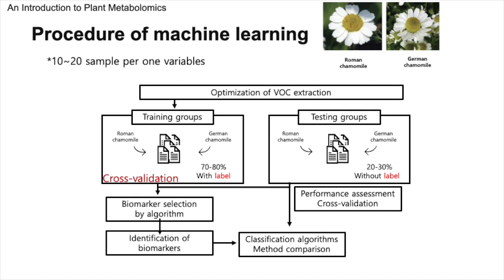As we sift through the data, our algorithms work diligently to pinpoint the biomarkers — the VOCs that will serve as the flag bearers for each chamomile type. Selecting the correct biomarkers is akin to choosing the right clues in a mystery; they must lead us to the correct conclusion with high confidence. With our model trained and biomarkers at hand, we proceed to the testing phase. Here, our model faces the true test: can it accurately classify the unlabeled samples? This is where we measure success in terms of accuracy, precision, and the ability to generalize beyond the training data.